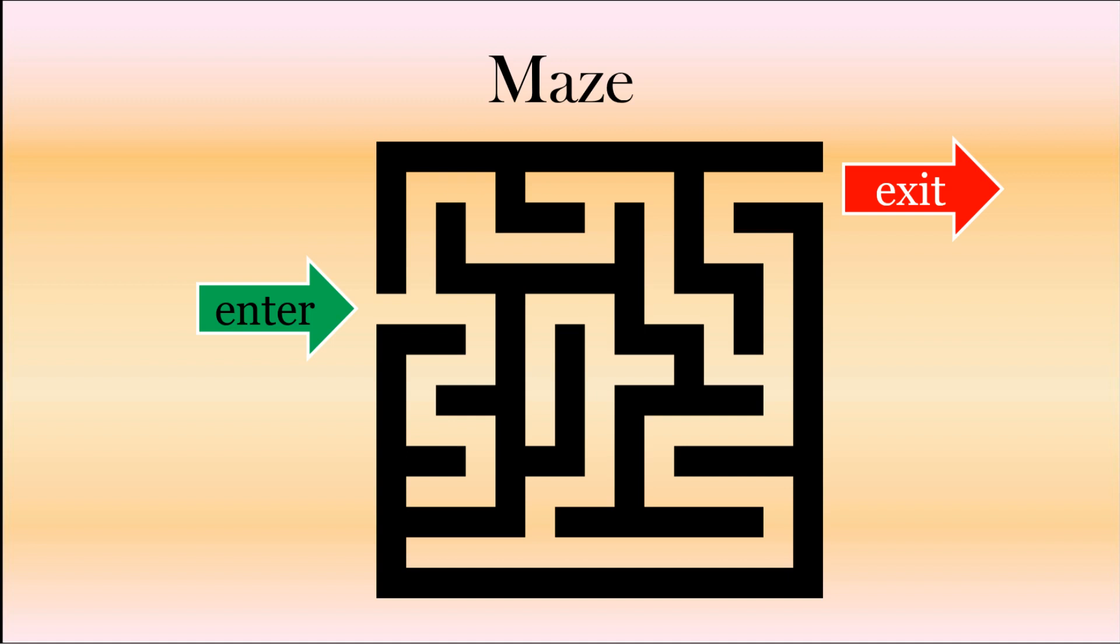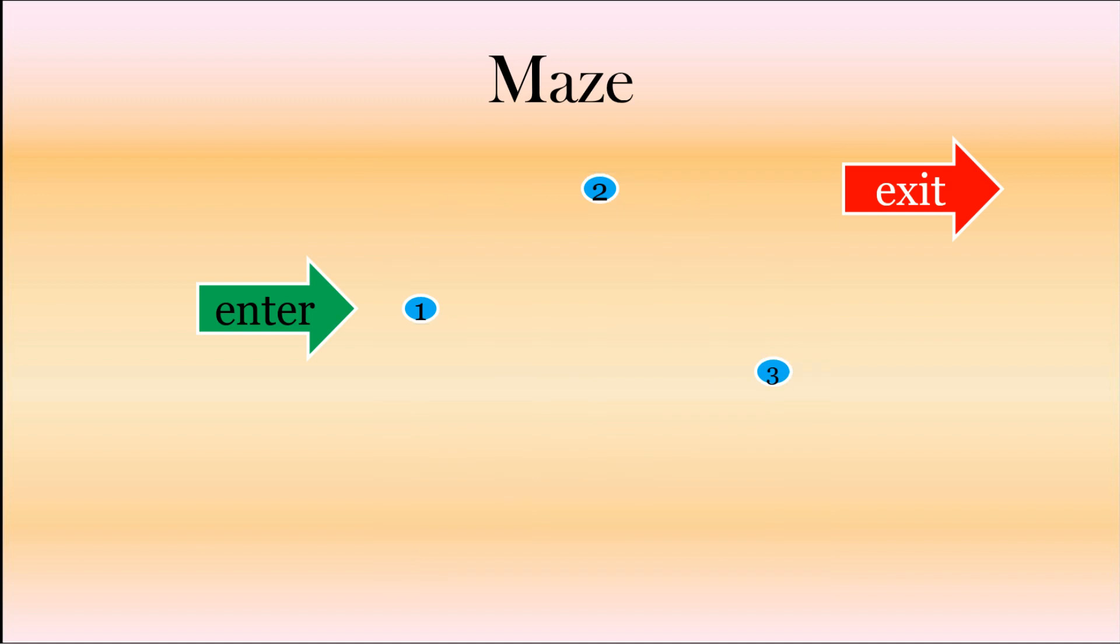Hopefully at some point we get the maze correct and we come out the exit. This is a quite simple example of a maze. So let's have a look. Here we've got three places where we make a choice of left or right, so we've got one, two, and three, then exit. So we've got a choice of left or right, left or right, and left or right.